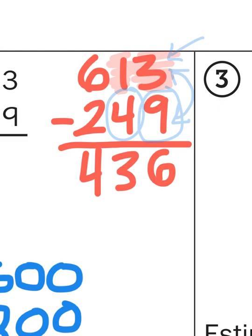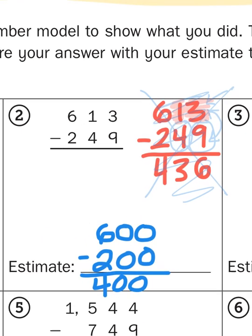Our brains want to switch those around because we can't rationalize how to subtract a larger number from a smaller number. So we just flip it. It's a common mistake. But it is a mistake.